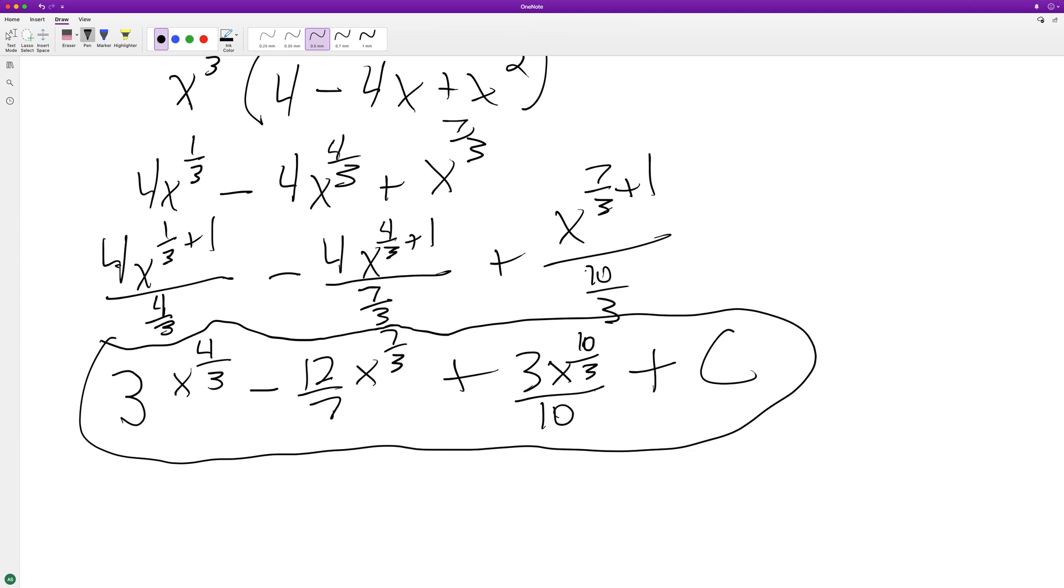I'll pull down the four thirds, so I get 12 over three, x raised to the one third minus seven thirds, so it becomes four x raised to the four over three.